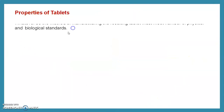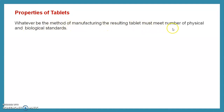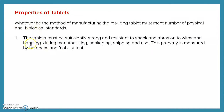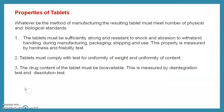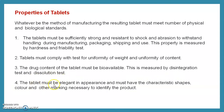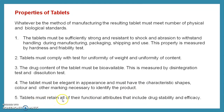Now we see the properties of the tablet. Whatever the method of manufacturing, the resulting tablet must meet a number of physical and biological standards. The tablet must be sufficiently strong to resist shock and withstand handling during manufacturing, packaging, shipping, and use — this property is measured by hardness and friability tests. The tablet must comply with tests for uniformity of weight and uniformity of content. The drug content must be bioavailable, measured by disintegration and dissolution tests. The tablet must be elegant in appearance with characteristic shapes, colors, and markings. The tablet must retain drug stability and efficacy.